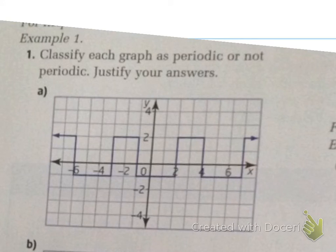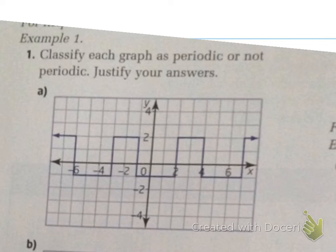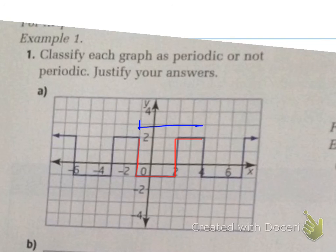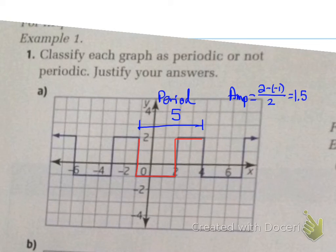Last example: classify each graph as periodic or not periodic. Is this graph periodic? You should always trace a cycle to show what repeats itself. Tracing a cycle here, the period is 5. The amplitude is: 2 minus negative 1, divided by 2, which is 1.5. It's very easy to find the period and amplitude — you just have to remember how to look for it. That's the end of the video. Have a numerical day!